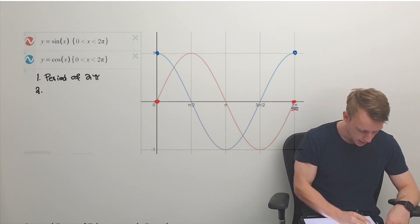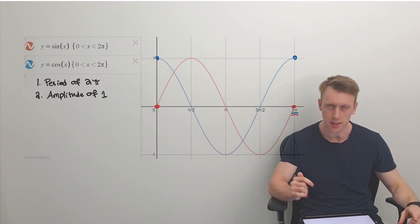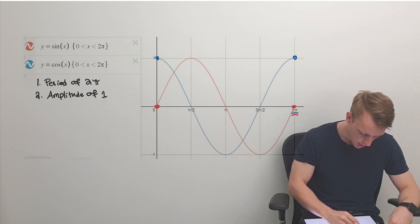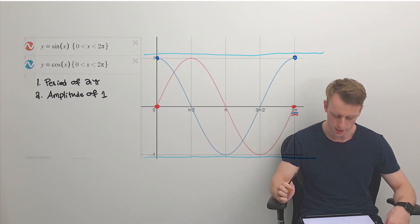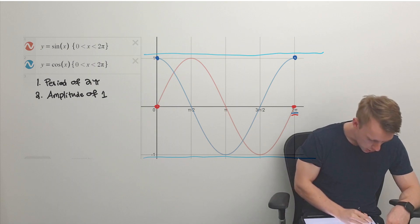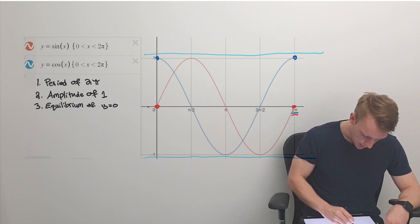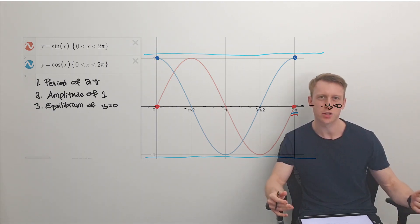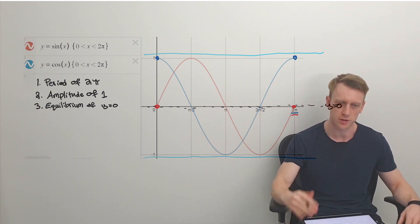The second thing is that we have an amplitude of one. The amplitude is how far up and down the graph will go — it's bounded between one and negative one. As we increase the amplitude, the wave goes higher up and lower down. The third thing is the equilibrium equation of y equals zero. That is the line y equals zero — imagine this wave as a guitar string that settles back down to that equilibrium.